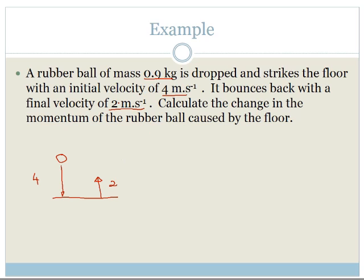Now velocity is a vector, so therefore we need to worry about direction. So let us choose our initial direction as positive. Our initial direction is positive. So what does that mean?